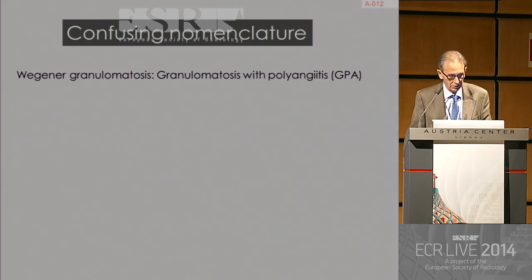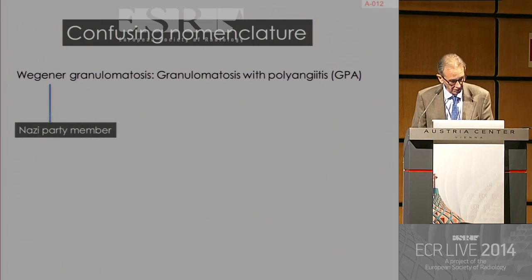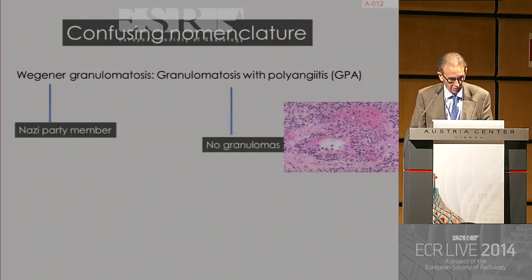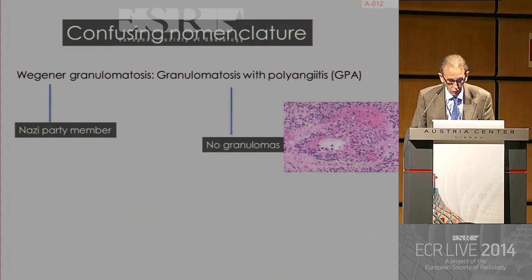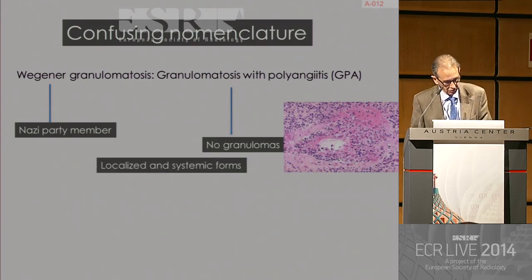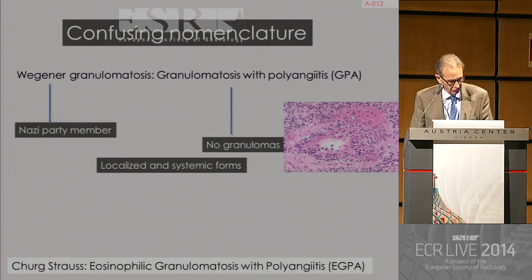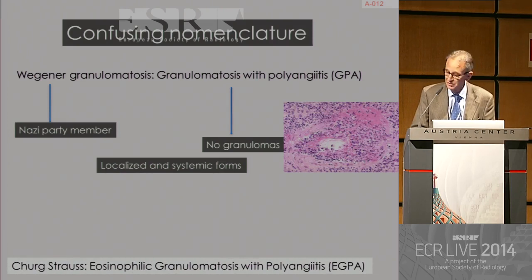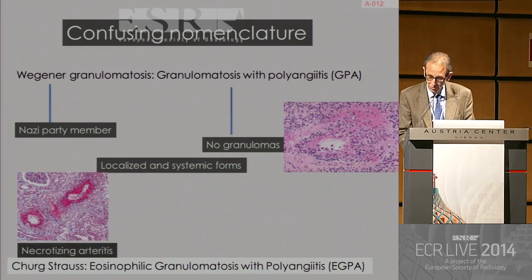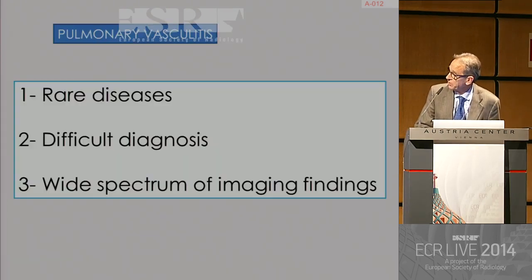For example, Wegener granulomatosis is now called granulomatosis with polyangiitis, mainly because this man was a very active Nazi party member, and the name has been excluded, although it remains in our memory. Another interesting thing is there are no true granulomas in this disease, although it's called granulomatosis. Churg-Strauss, as we have seen in the previous lecture, is now called eosinophilic granulomatosis with polyangiitis.